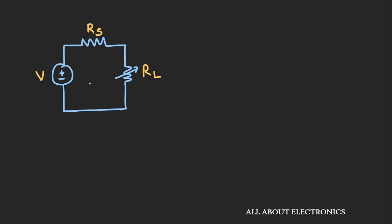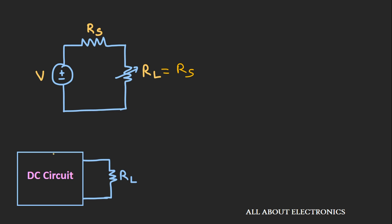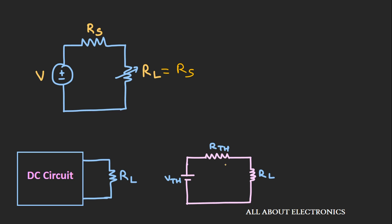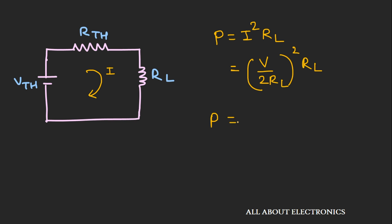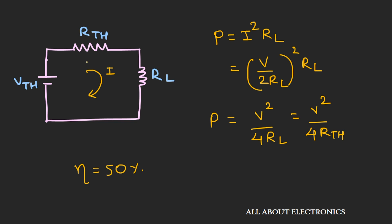We had seen that the maximum power will get transferred from the source to the load when the value of the load resistance is equal to the series internal resistance of the voltage source. Or if the load resistance is connected to a DC circuit, that circuit can be converted into the equivalent Thevenin's voltage source in series with the Thevenin's equivalent resistance. Maximum power gets transferred to the load when the load resistance equals the Thevenin's equivalent resistance RTH. The power P delivered to the load is I² × RL, where I is the current flowing through RL. The maximum power transferred is V² / (4·RL), and the same amount of power is dissipated across the Thevenin's equivalent resistance, V² / (4·RTH). In terms of efficiency, only 50% of power gets delivered to the load, as half is dissipated across the Thevenin's equivalent resistance.